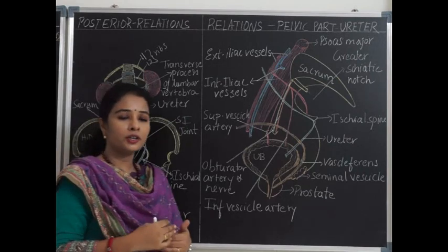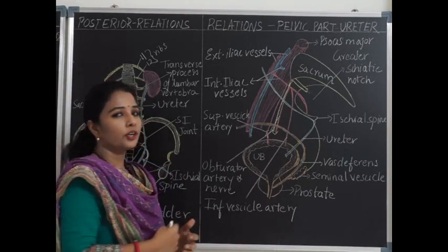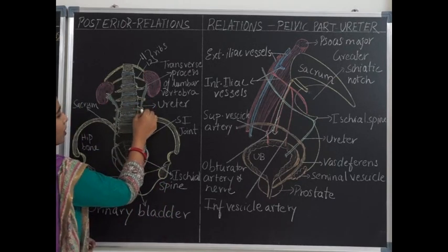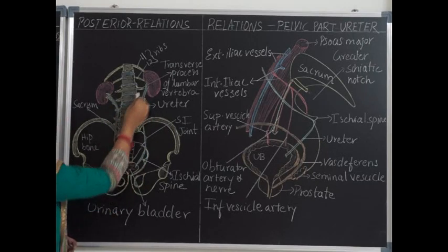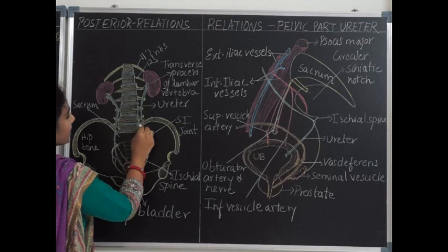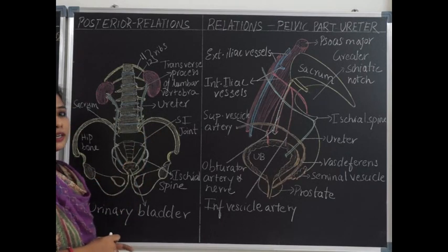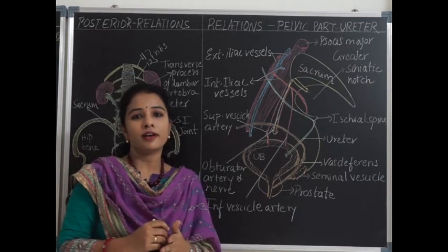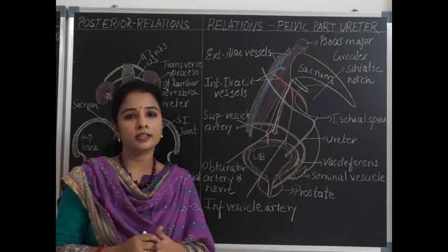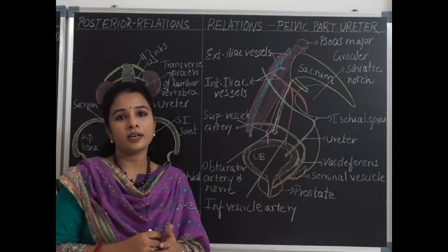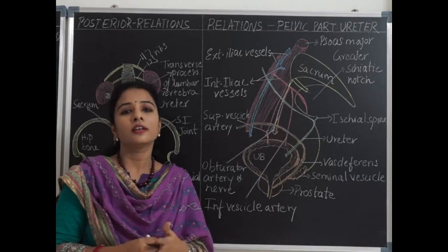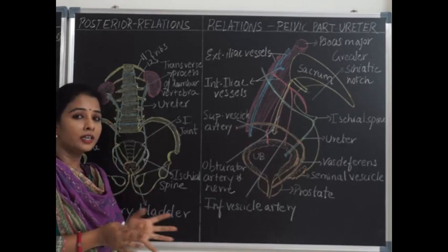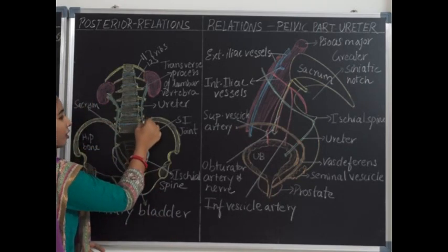In the posterior abdominal wall, the ureter lies retroperitoneally, closely related to the posterior abdominal wall. It crosses the tips of the transverse processes of the lumbar vertebrae. As it reaches near the pelvic brim, it crosses the bifurcation of the common iliac artery — the common iliac artery divides into the external iliac and internal iliac. The right and left common iliacs are the terminal branches of the abdominal aorta. At the point where the common iliac divides, the ureter crosses and enters the pelvis.